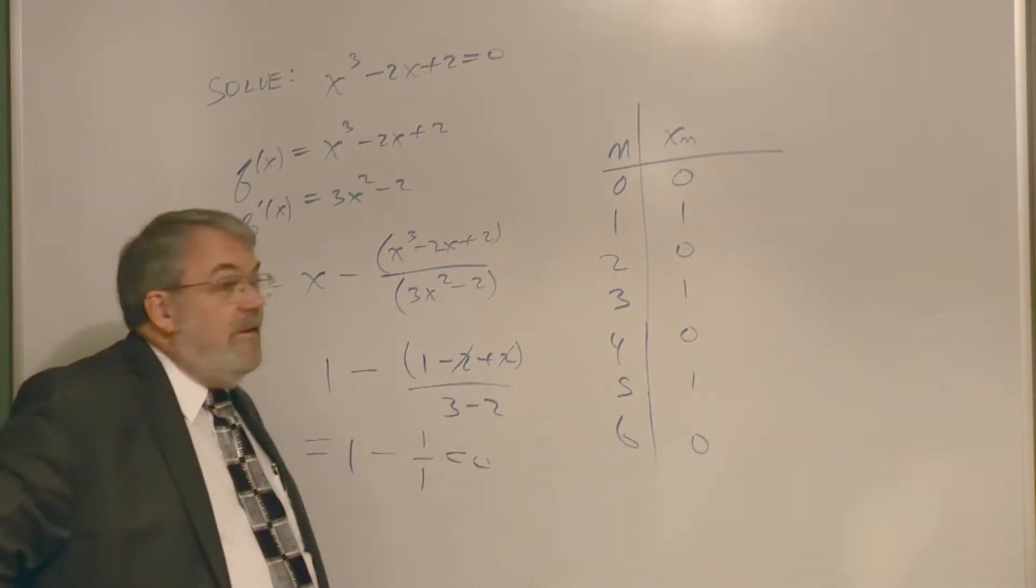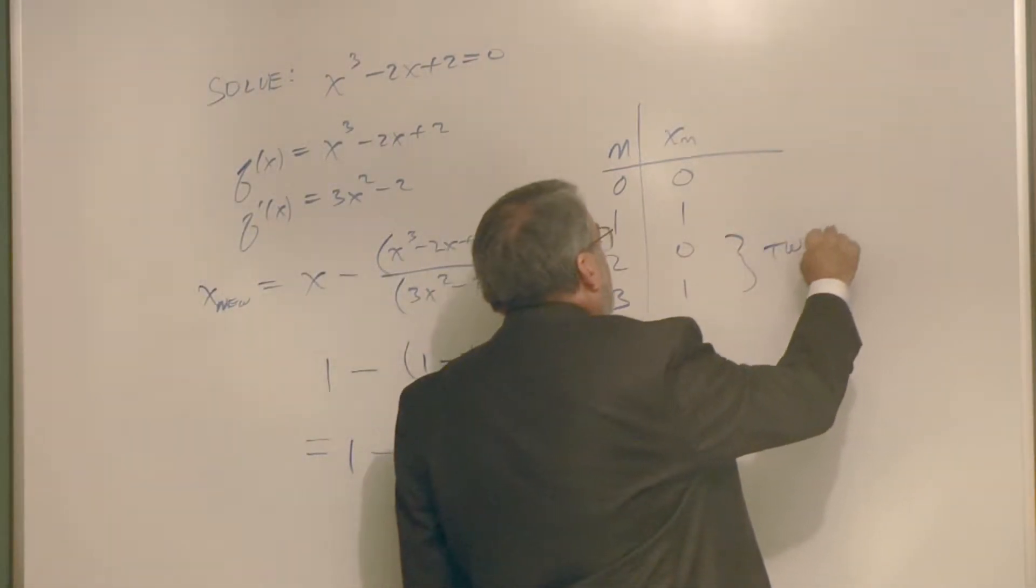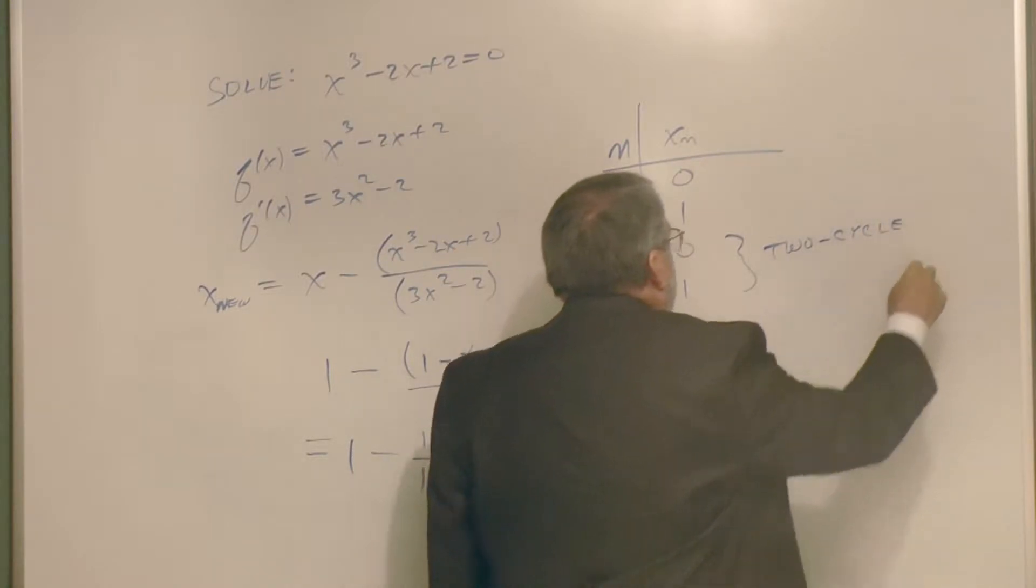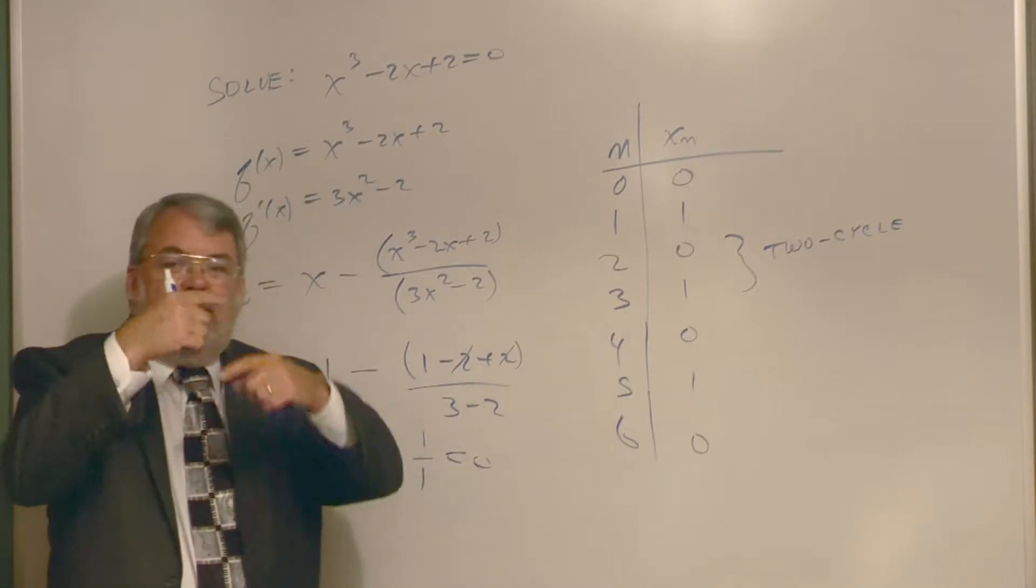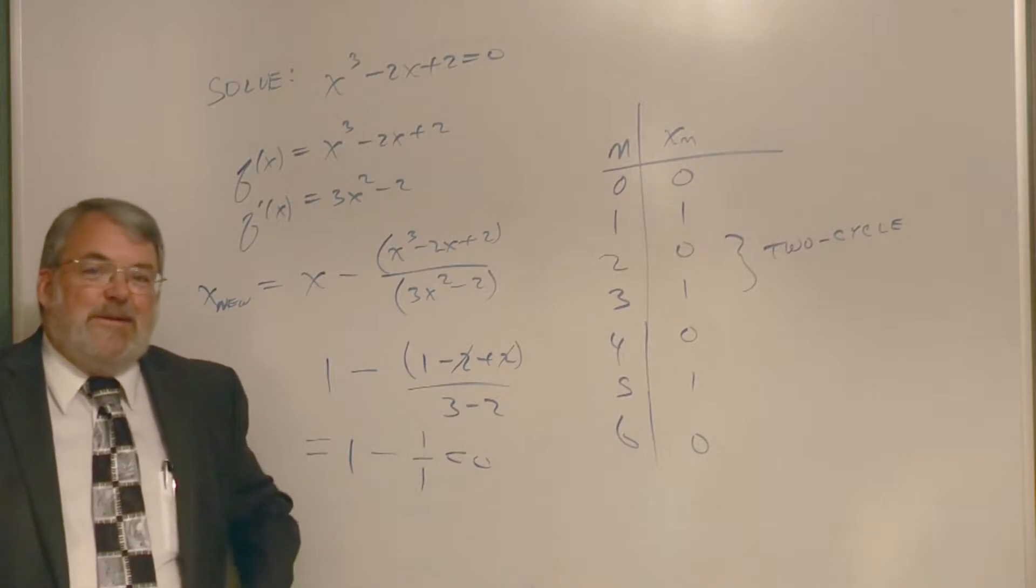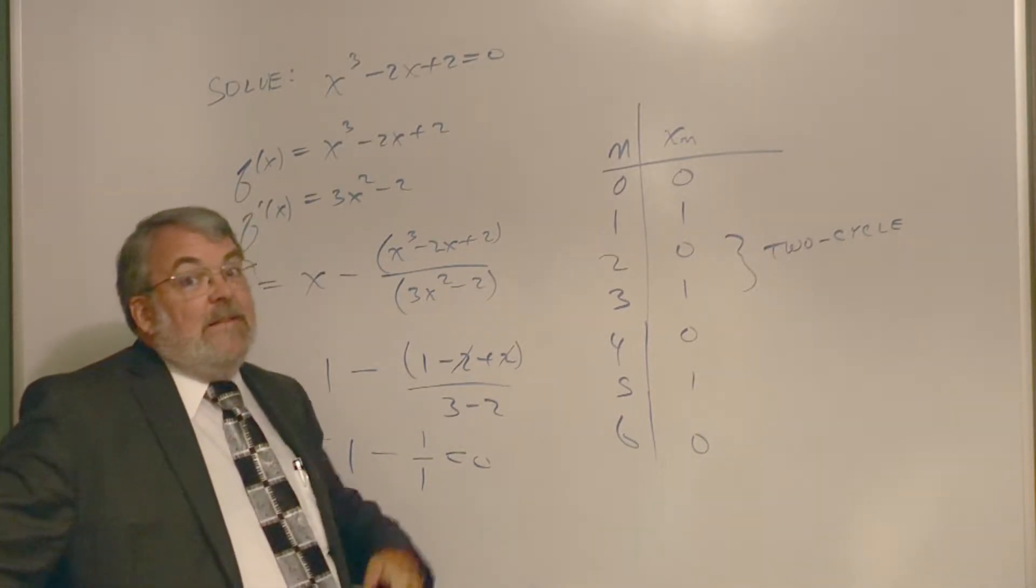It's possible to get into some kind of infinite loop where you just keep going back and forth. This happens to be called a 2-cycle because it continually repeats two numbers. It's possible to get a 3-cycle where you get 3 numbers that keep repeating or 4 numbers that keep repeating, a 4-cycle.